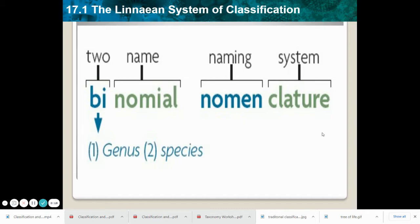This process of assigning this two-part name is referred to as binomial nomenclature, and you can see how we can break these words down. So bi meaning two, nomial meaning name, and then nomenclature naming system. So this is a two-name naming system that is derived from the taxa in the classification of an organism. The two parts of what's referred to as your scientific name are the genus and the species.